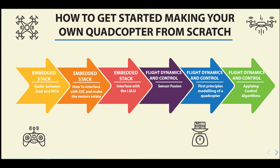The second part will be how do you interface with an electronic speed controller and how do you make the motors rotate. If you buy an off-the-shelf flight controller, sending signals and communicating with the ESC to make the motor spin is abstracted from the user. In this case, we'll use our microcontroller and start programming algorithms that help send signals to the electronic speed controller, which will eventually make the motors rotate. We'll talk about the timing diagram, what the pulse looks like, and what signal you need to send to make your ESC work.